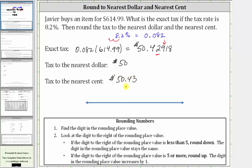What we're doing here is really trying to determine whether the exact tax is closer to $50.42 or $50.43. Going back to the number line one last time, on the left we'd have $50.42. On the right we'd have $50.43, which is the nearest cent. Right in the middle we would have $50.425.